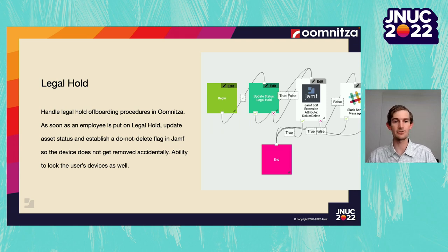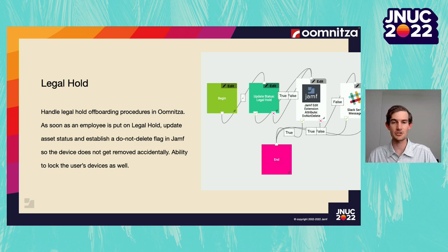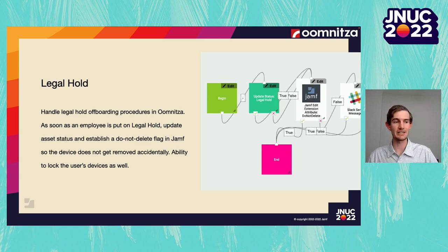Another key area Umnitsa helps solve related to offboarding is the legal hold process. If we detect from the HR system that an employee is to be offboarded or has been placed in a legal hold state, we can turn that information into action. First, we update the record status in Umnitsa to reflect what we see in the HR system, and then we set an extension attribute in Jamf called 'do not delete,' so that additional data hygiene workflows know not to delete that device while it's in legal hold status. We can then send a Slack notification directly to the employee and to an internal channel, and based on whether they have Apple devices or a mix, various systems and API blocks are pulled into the workflow to ensure proper recognition and enforcement of the legal hold status.